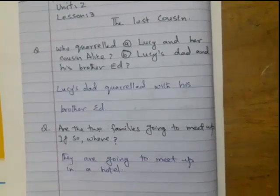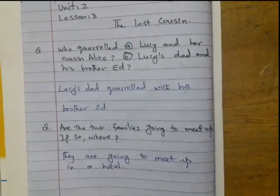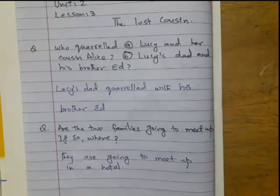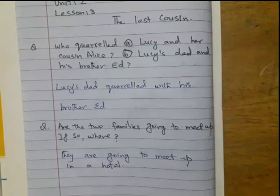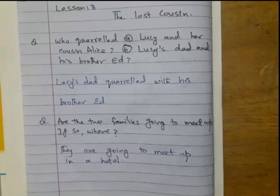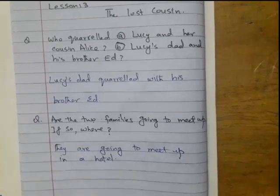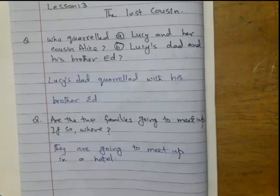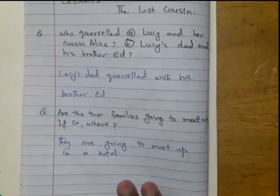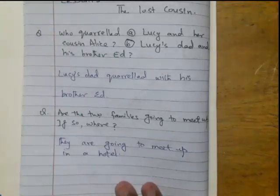The Last Cousin. Here there were two questions. Who quarreled: Lucy and her cousin Alice, or Lucy's dad and his brother Ed? The right answer is Lucy's dad quarreled with his brother Ed. Are the two families going to meet up? If so, where? They are going to meet up in the hotel. These are the questions which are given on the page 10.